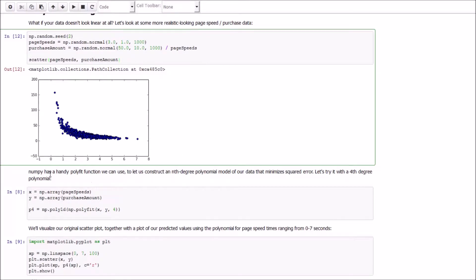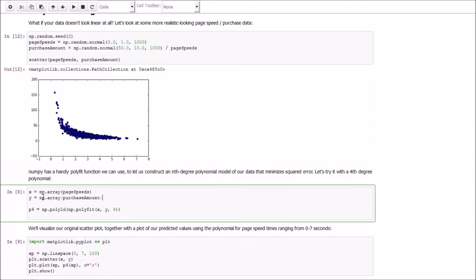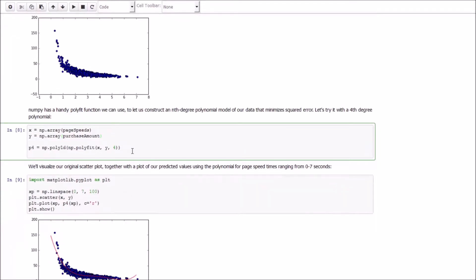Now it turns out NumPy has a polyfit function that allows you to fit any degree polynomial you want to this data. For example, we could say our x-axis is an array of the page speeds that we have and our y-axis is an array of the purchase amounts that we have. We can then just call np.polyfit x, y, and 4, meaning that we want a fourth degree polynomial fit to this data. So let's go ahead and run that.